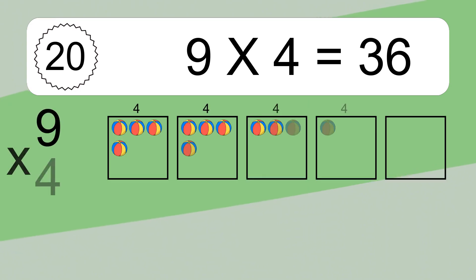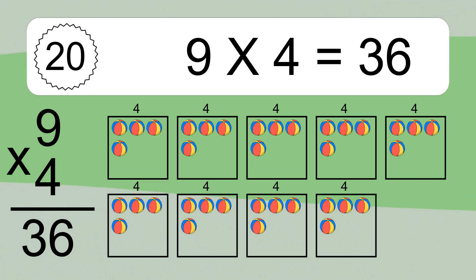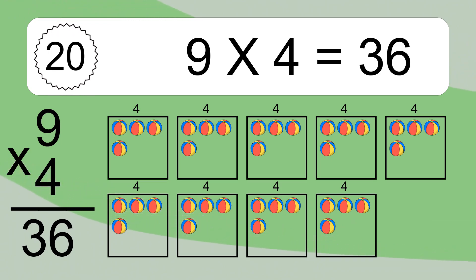9 times 4 equals what? 9 times 4 equals 36. We have 9 boxes, and each box has 4 colorful balls inside. If you count all the balls in all the boxes together, you will have 9 times 4 balls. This equals 36 balls.